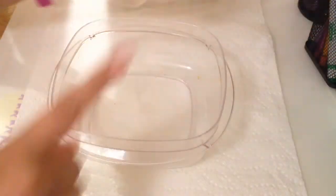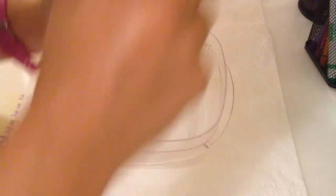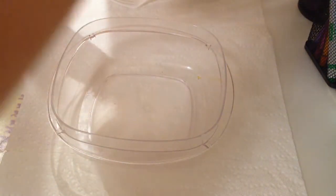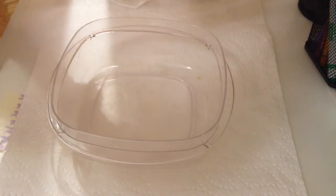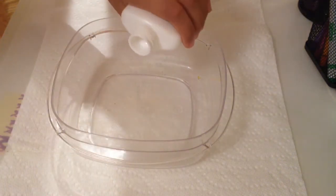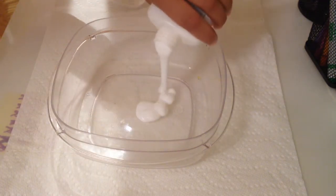So you're first going to start by taking your glue and you want to make sure that it's PVA and it says school glue, and you just want to pour that into your bowl. Depending on how big or how small you want your slime to be, just pour how much glue you want.